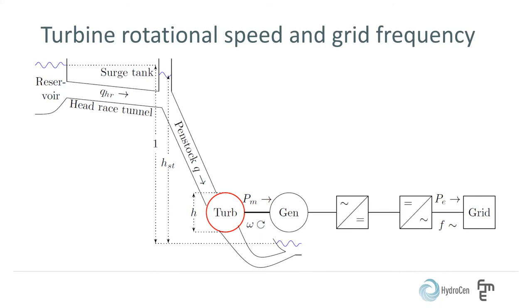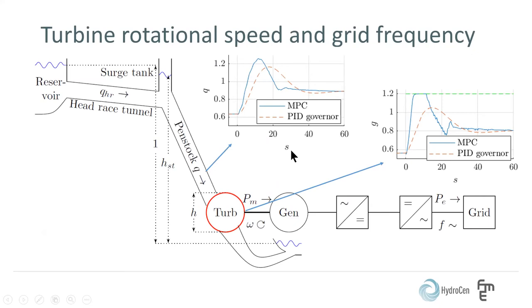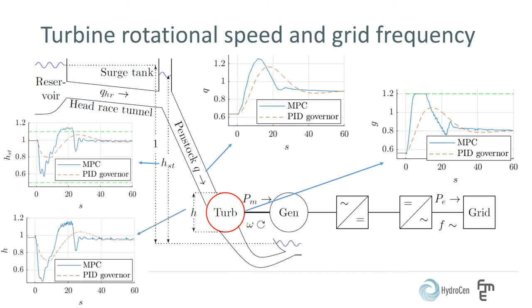The MPC increases the guide vane opening of the turbine and thereby the turbine flow faster than the PID controller. This is possible since the MPC considers the constraints of the hydraulic system, such as the surge tank head and turbine head. The MPC will therefore change the guide vane opening as fast as possible without exceeding these constraints. While the PID controller has to be parametrized conservatively to avoid too high or too low surge tank head causing damage to the system.